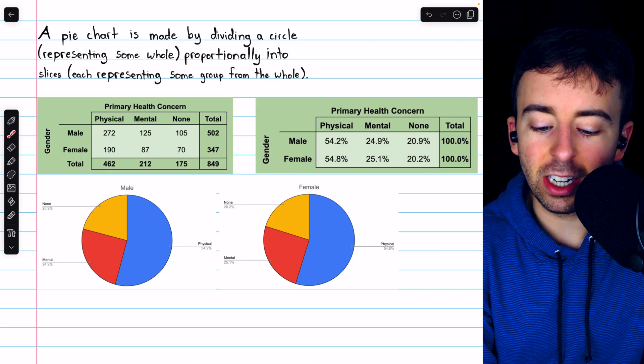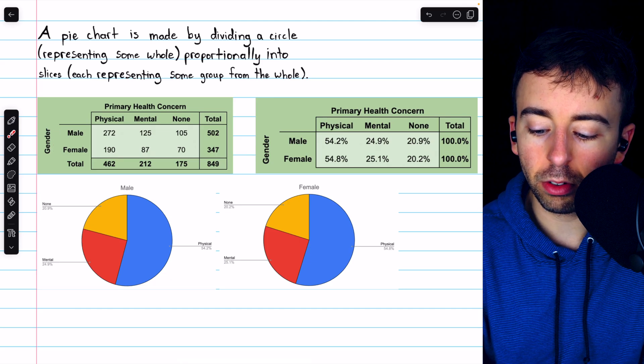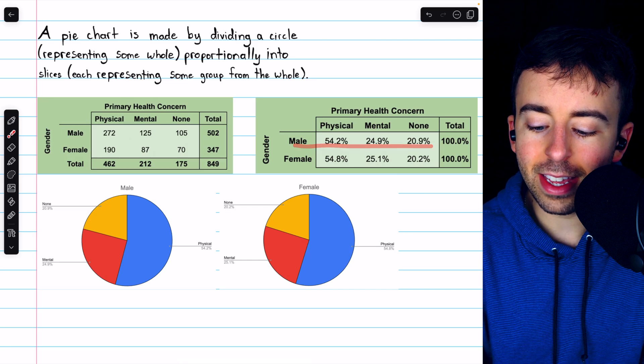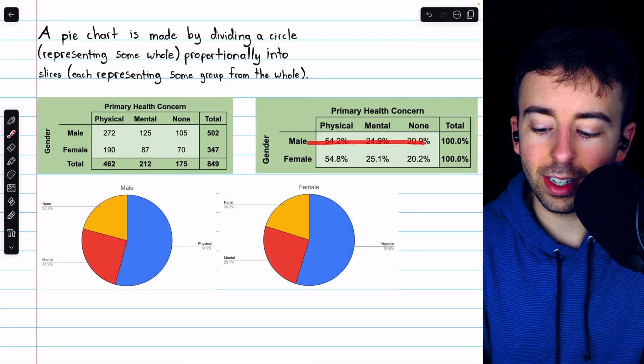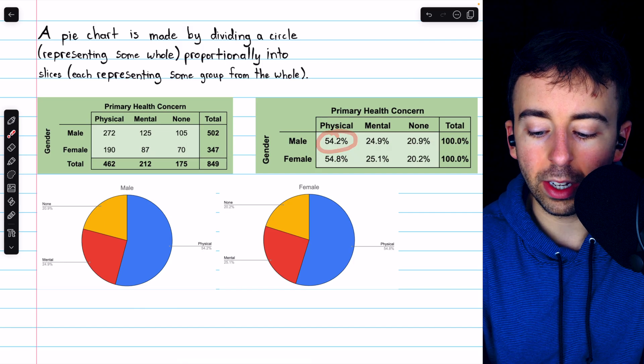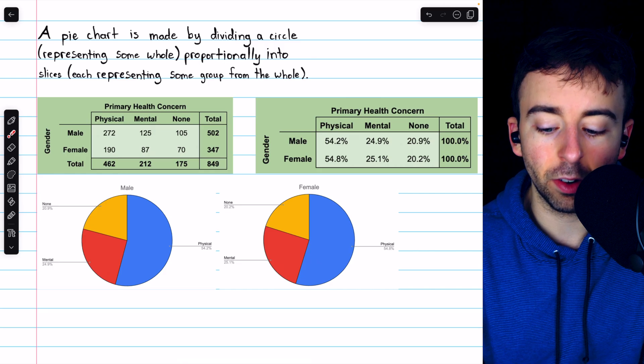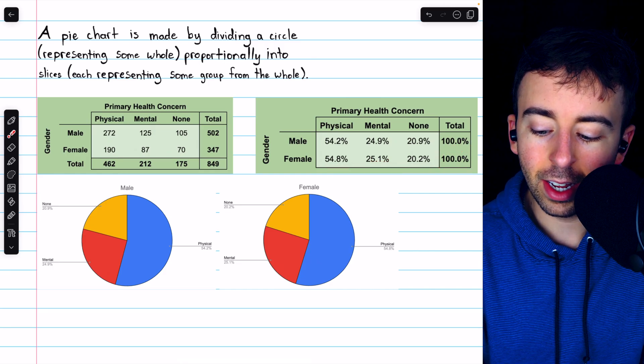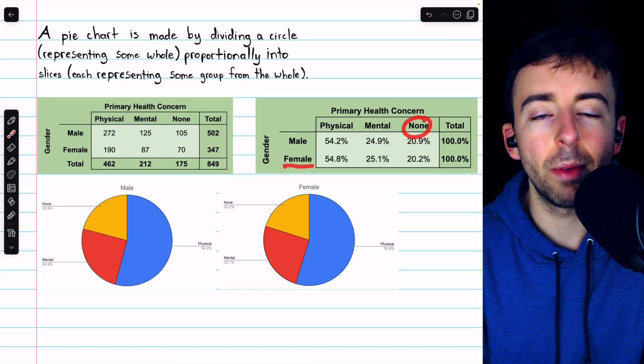We could calculate the conditional distribution of primary health concern across the two genders, which would look like this. We have the conditional distribution for males and the conditional distribution for females. To make sure this chart is clear, this row is representing all males, and so it adds to 100%. For example, 54.2% of males had physical health concerns as their primary concerns. This row represents all of the women. It adds up to 100%, and for example, 20.2% of females had no primary health concerns.